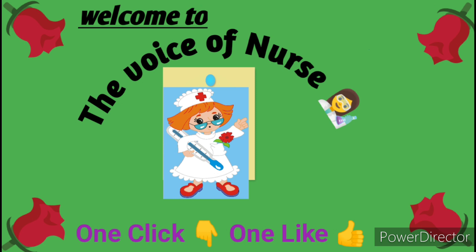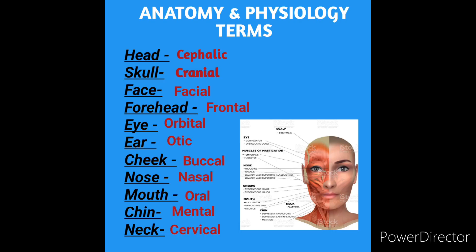Now we will discuss the terminology of the anterior view of anatomy and physiology. Head: cephalic. Skull: cranial. Face: facial. Forehead: frontal. Eye: orbital. Ear: otic. Cheek: buccal. Nose: nasal. Mouth: oral. Chin: mental. Neck: cervical.